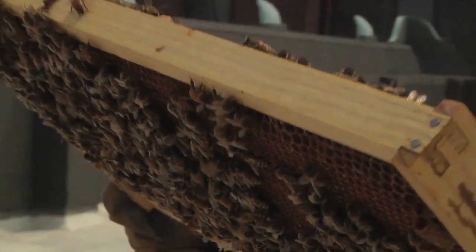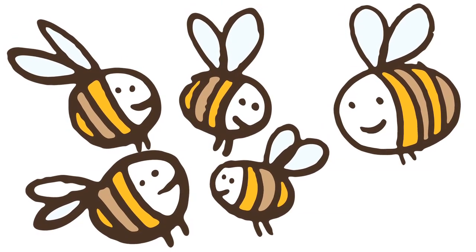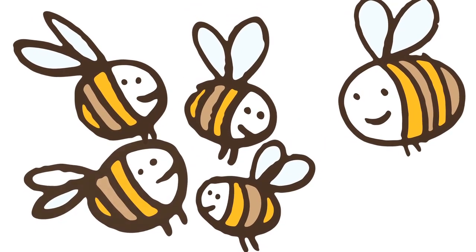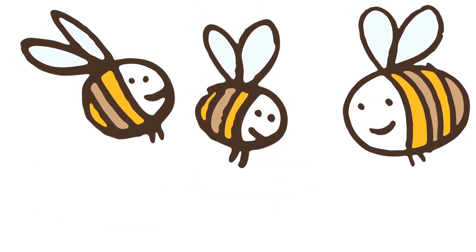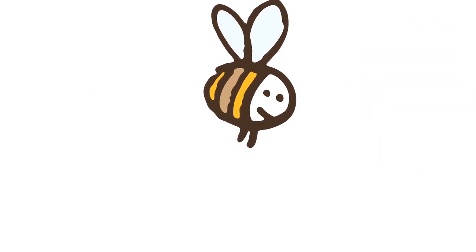What's happening to honeybees is called colony collapse disorder and basically what happens is that an apparently healthy hive one week will be essentially decimated the next week and all of the adult bees sort of disappear for reasons that are unknown.